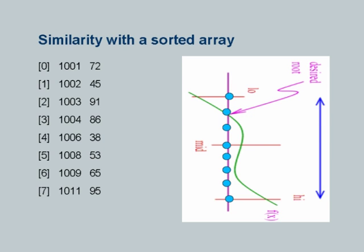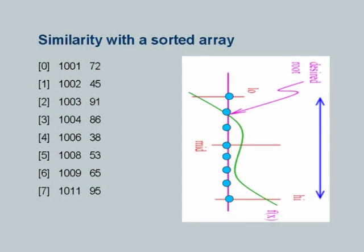Just as for root determination we went to the midpoint and converged faster towards the root, similarly we can go to the midpoint in the array, and if it is not the desired number, check whether it is larger or smaller than what we are looking for, and move the low and high appropriately. In case of an array, low is exactly equal to 0 — the first element — and high is the maximum index — the last element.